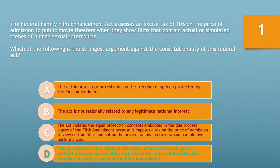The government, however, is permitted to use zoning ordinances to regulate the location of adult bookstores and adult movie theaters because the government does have an important interest in preserving the character of its neighborhoods. Here, the Federal Family Film Enhancement Act assesses an excise tax of 10% on the price of admission to public movie theaters when they show films that contain actual or simulated scenes of human sexual intercourse. This is a content-based restriction.